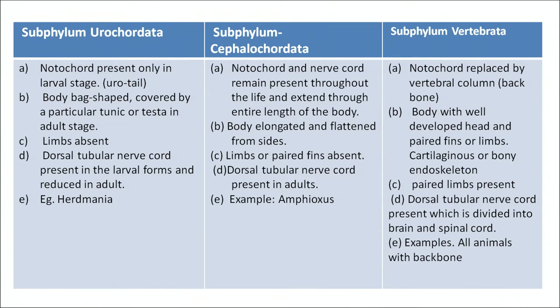In Urochordata, limbs are absent. The dorsal tubular nerve chord is present in larval forms and reduced in adult form. The second subphylum is Cephalochordata — notochord and nerve chord remain present throughout life and extend through the entire length of the body. The body is elongated and flattened from the sides. Limbs or paired fins are present. They have a dorsal tubular nerve chord in adult form. Example: Amphioxus.